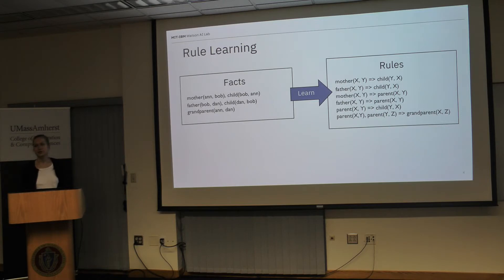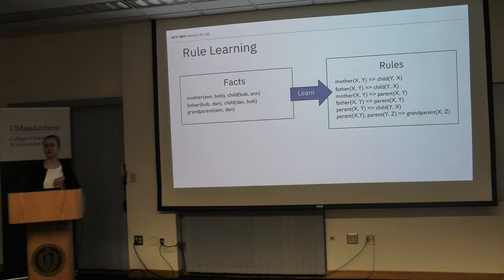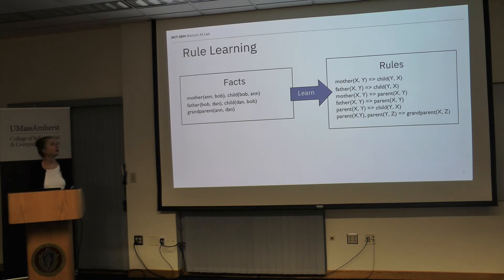Knowledge graphs today are collections of facts describing relations between entities. For instance, we can say that Anne is the mother of Bob, or that Bob is the child of Anne. The goal is to learn datalog rules like: for all X and Y, if X is the mother of Y then X is the parent of Y. Such rules are a much more compact form of knowledge — you could store one mother-implies-parent rule and use it to retrieve such knowledge.